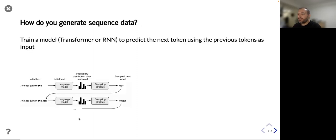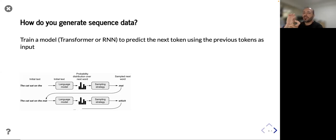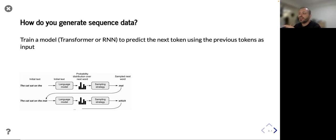To generate a sequence of data, we train a model — either a transformer or an RNN — to predict the next token given the previous tokens as input. We feed some initial text to the language model, get a probability distribution for the next token, and use a sampling strategy to pick one. We add that token to the input and repeat, stopping either at an end token or after a fixed number of tokens.